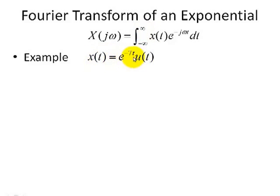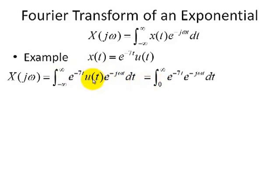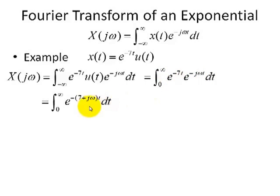We simply substitute x of t into our Fourier transform definition. It's shown here — we're integrating from minus infinity to infinity. With the step function, we can change the integration limits, remove the step function from the integral, and now we're integrating from 0 to infinity. Now we have two exponentials: one is real and the other is a complex exponential. Since they have a common base, we can add them, as shown here.